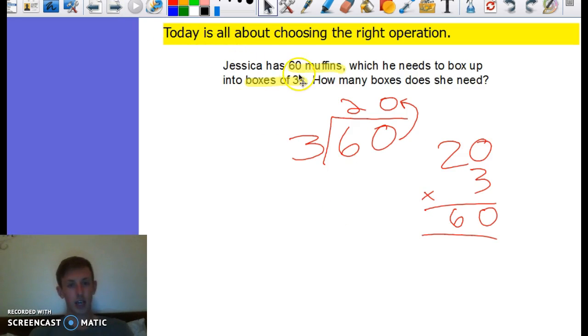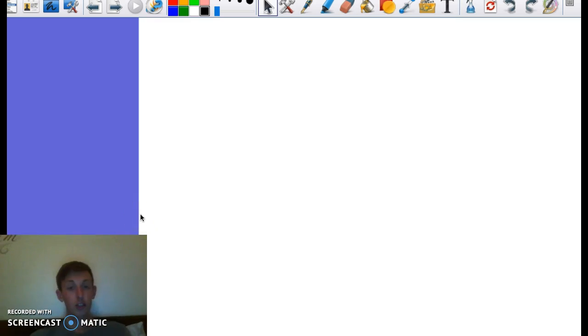Jessica has 60 muffins but she needs to box them up into boxes of threes. How many boxes does she need? So we did 60 divided by 3, because she had 60 muffins in total and she wanted to group them in threes. It gave her 20 boxes of three muffins, and then we checked that by doing 20 times 3 to give us 60.